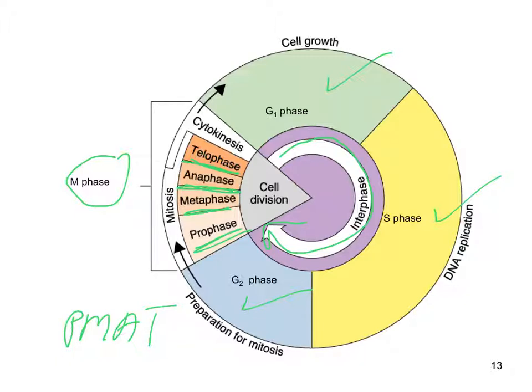At this point the cells are ready to finally tear apart and create the two new daughter cells. That last part where the cytoplasm actually tears apart is called cytokinesis. Then the process begins again with interphase, with the two new identical daughter cells.